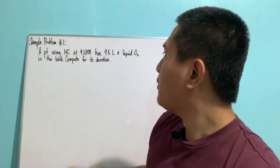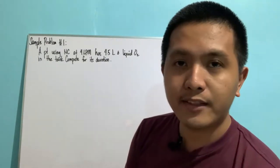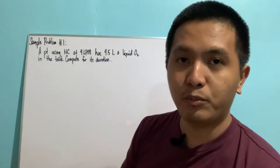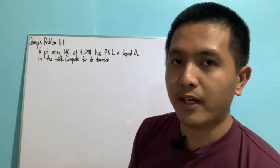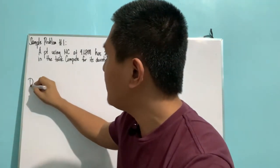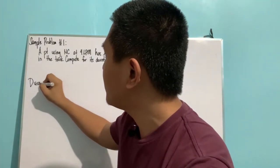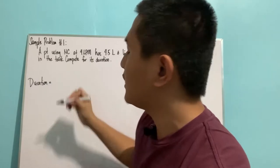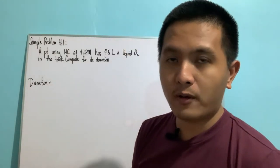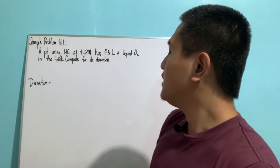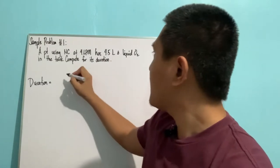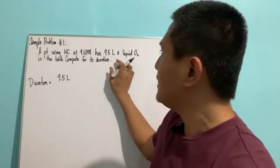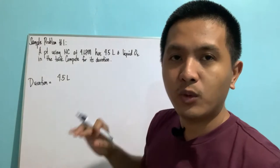Let's have our first sample problem. A patient using a nasal cannula at 4 liters per minute has 4.5 liters of liquid oxygen in his tank. Compute for its duration. The formula will be written as: duration equals the amount of gas in liters over the flow rate. In this problem we have 4.5 liters, but this is liquid oxygen.